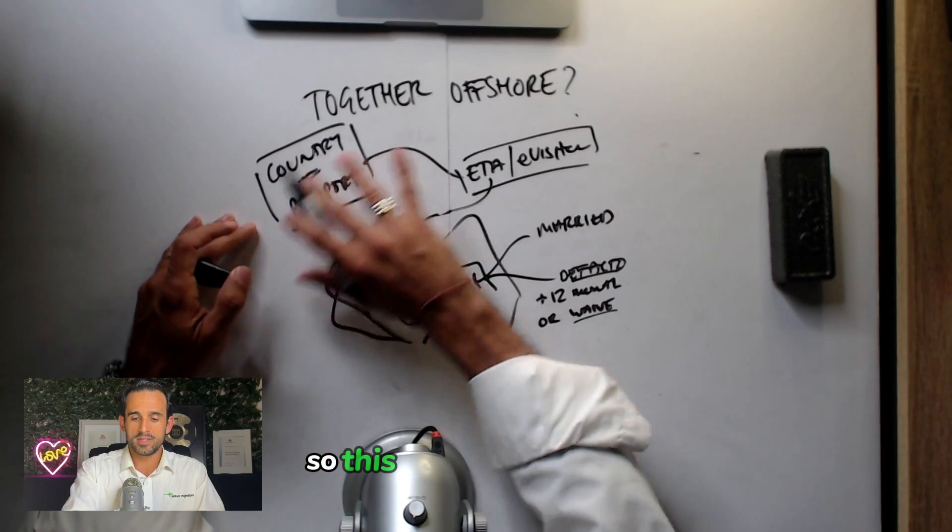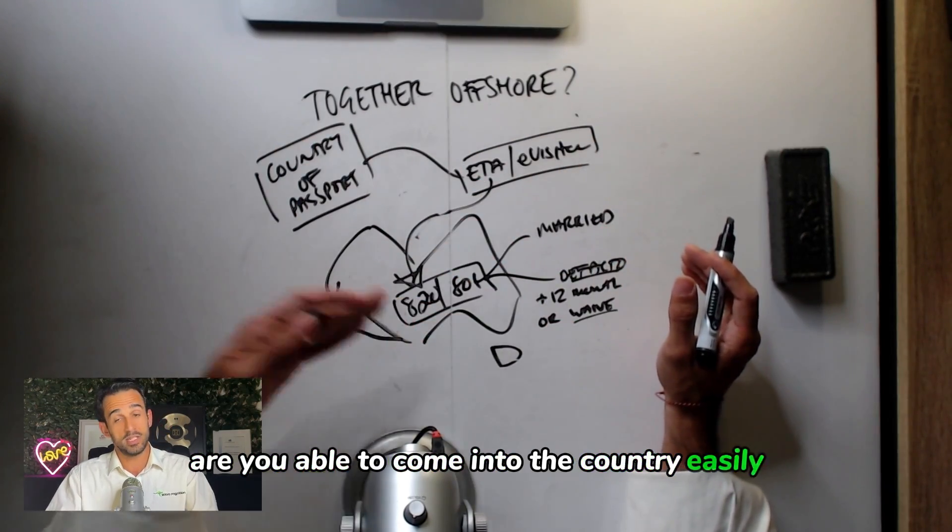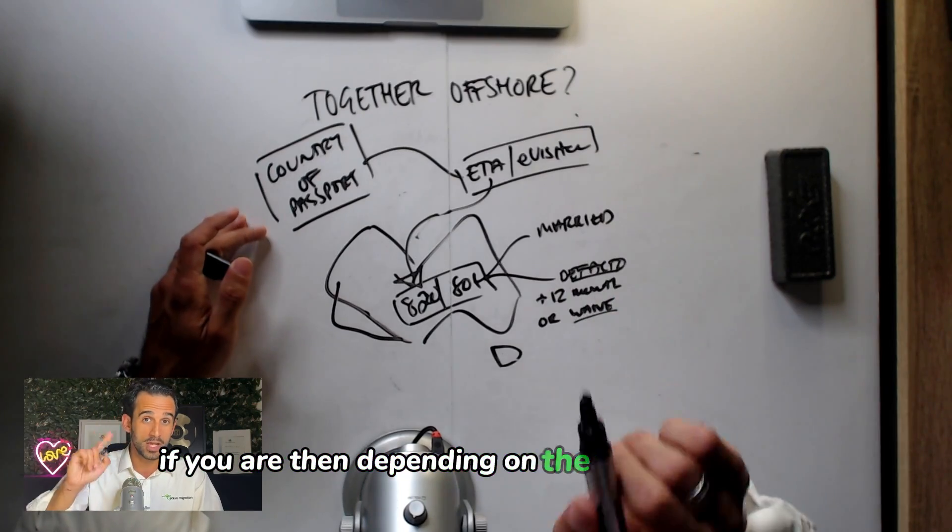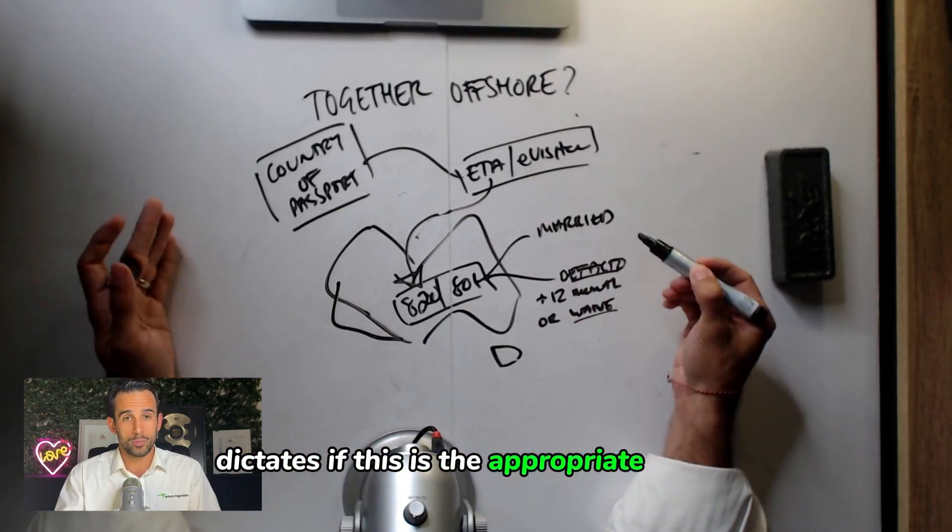So this is the first variable. What is your country of passport? Are you able to come into the country easily? If you are, then depending on the answer to the next question dictates if this is the appropriate option.